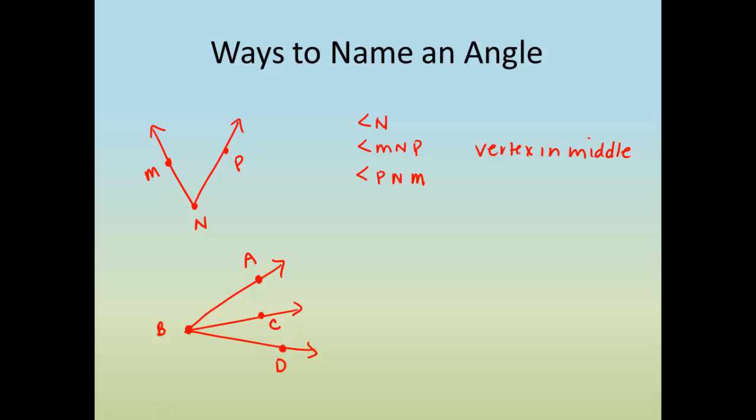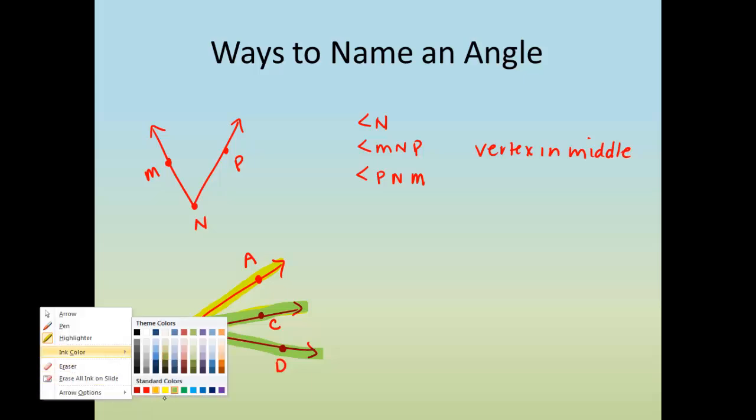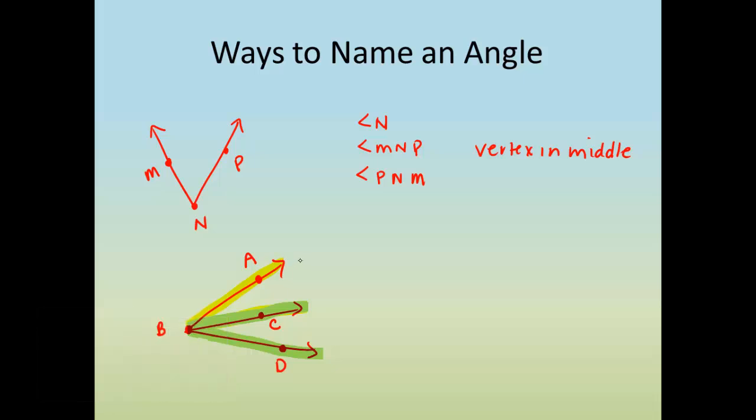Now there's a lot of ways we could name these angles. In fact, there's three different angles that we have. We have an angle up here at the top. We have an angle on the bottom, or we could talk about the entire angle, the large angle that we see. So we have three different angles we can talk about.